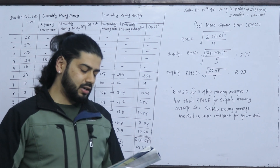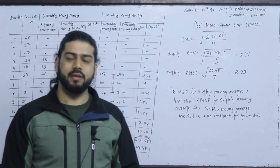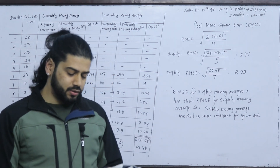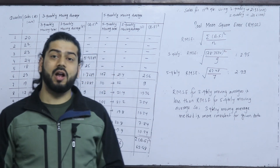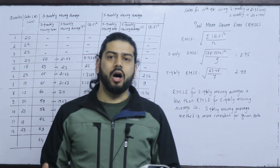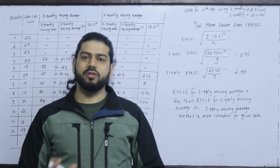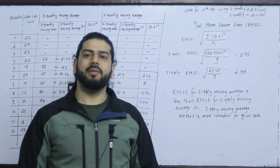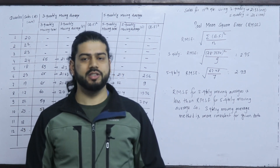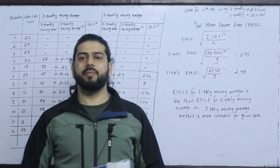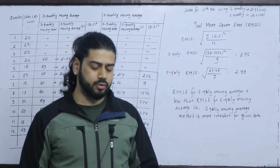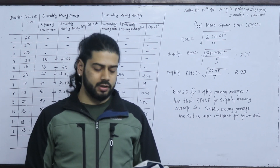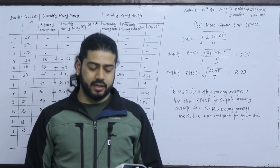So we have analyzed this. The three-quarterly moving average method is more consistent. We will provide the least squares equation in a separate class and will provide the link in the description. We will solve other possible questions as well. Thank you.